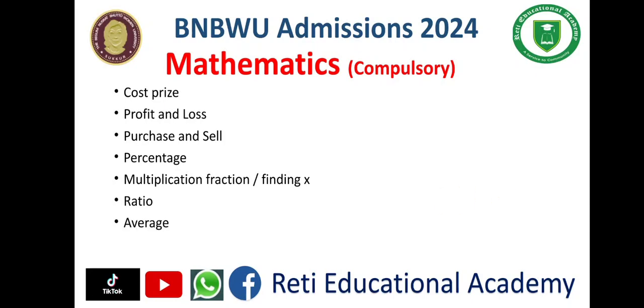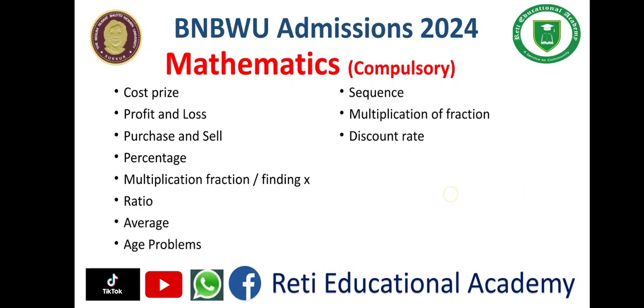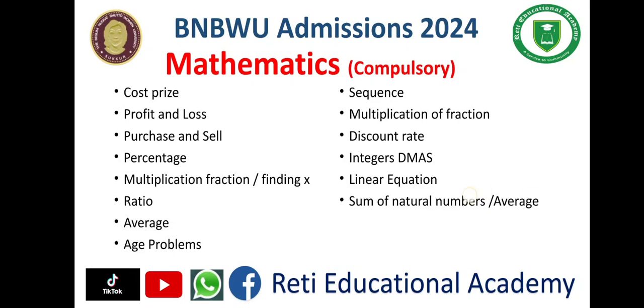Additional mathematics topics include: ratio, average, age problems, sequence, multiplication of fractions, discount rate, integers, linear equations, sum of natural numbers, average, quadratic equations, and geometric mean. I would suggest you cover textbooks especially for classes 6, 7, and 8, as well as radicals.